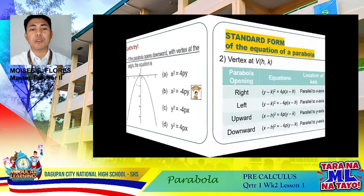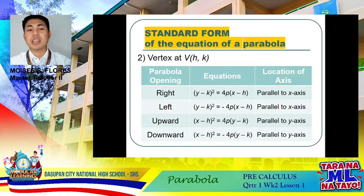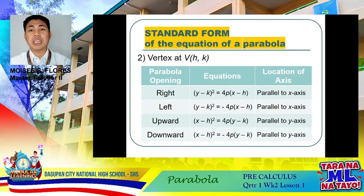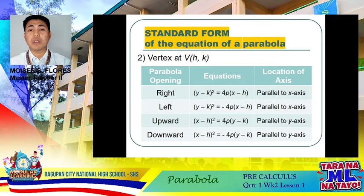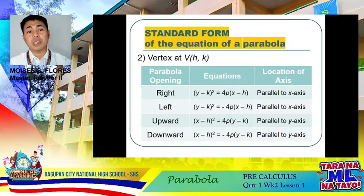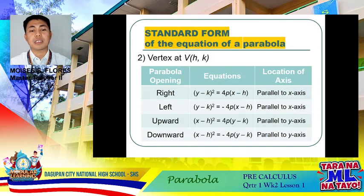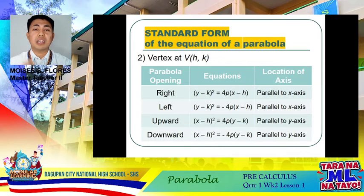Let's take the second form, which is vertex at (h, k). The only difference from the first form is that instead of the vertex being at the origin, it is now at (h, k). The same concept applies: if the opening is to the right or to the left, the variable y is on the second degree and the axis of symmetry is parallel to the x-axis. If the opening is upward or downward, the variable x is on the second degree and the axis of symmetry is parallel to the y-axis. Positive 4P means either right or upward; negative 4P means either left or downward.